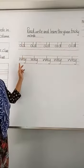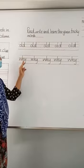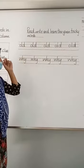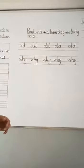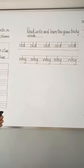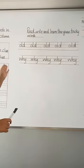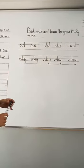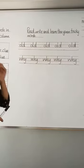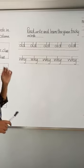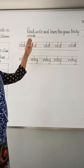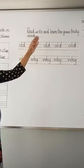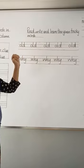The second tricky word is W-H-Y. So you have to complete page number 74 at home. The first part is to identify and write words in the appropriate column. The second part is to read, write, and learn the given tricky words. Thank you.